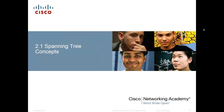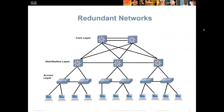Spanning tree concepts. Your typical network in a perfect world looks something like this: you have a core layer, a distribution layer, and an access layer. You've got layer three switches at the core and the distribution, and everything interconnects to everything so that if one line goes down anywhere, the network is still operational. That's what we mean by redundant — we can lose a link or two and still function, and people can still get their job done.